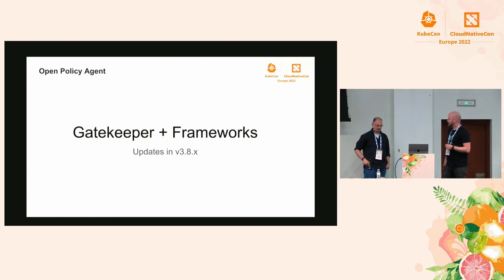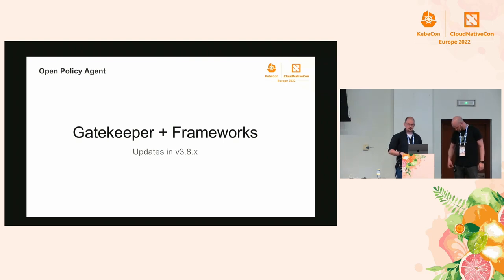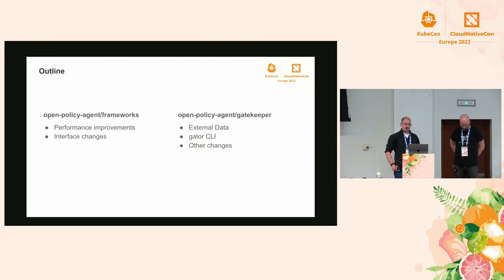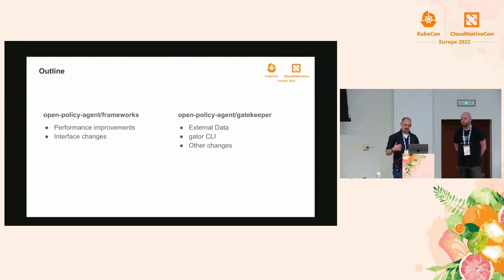That's the updates from OPA. I'm handing over to Will for the Gatekeeper part. I'm going to talk about two layers built on top of OPA: what we call Frameworks, which is a repository that several projects depend on, and then Gatekeeper, which is built on top of Frameworks. The idea of Frameworks is representing policies as KRM objects. You have types where an individual policy that is Rego code gets instantiated as a CRD in Kubernetes. Then you can apply constraints, which are also KRM objects, and configure policies on the fly.